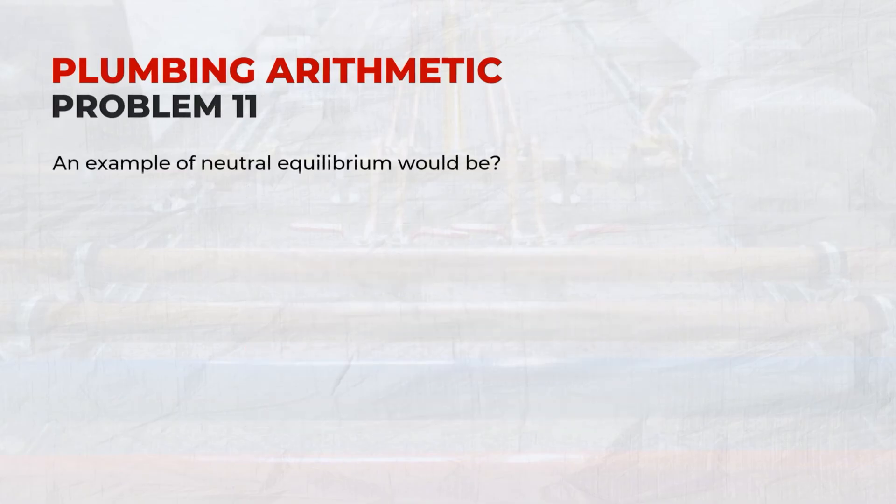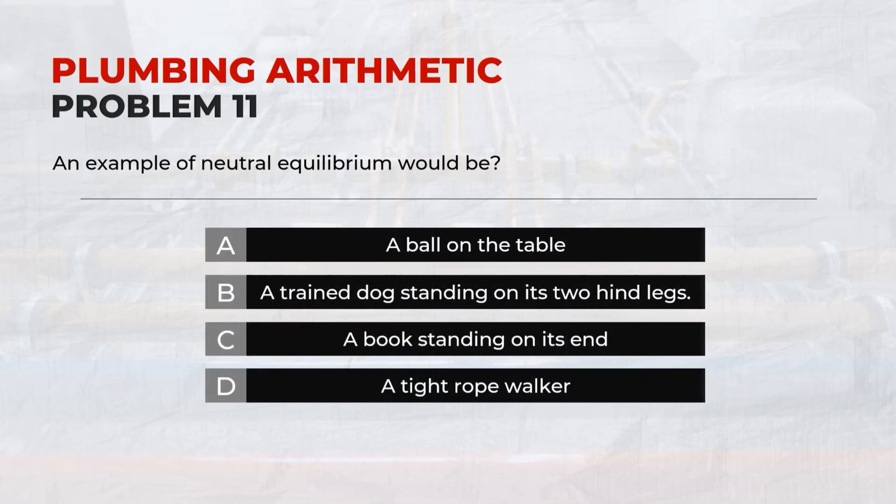Problem 11: An example of neutral equilibrium would be? Answer: A, A ball on the table.